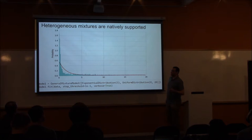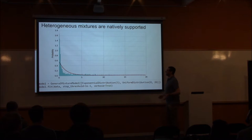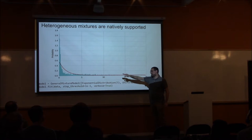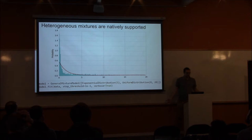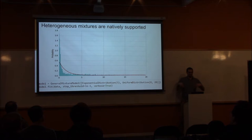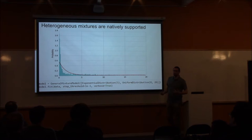We can also talk about heterogeneous mixtures — mixtures where each component doesn't follow the same distribution. There's no reason you have to use homogeneous components; you can have mixtures of arbitrary distributions. For example, here we're mixing an exponential distribution with a uniform distribution, thinking maybe the tail is uniformly distributed. Unfortunately it seems like this particular mixture doesn't fit very well — so this isn't exactly something you should do all the time. It's simply what you can do.